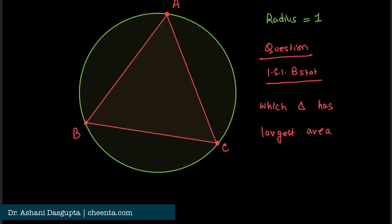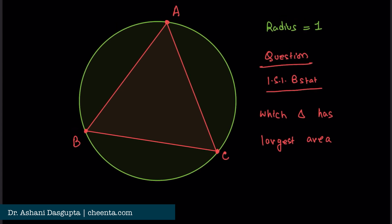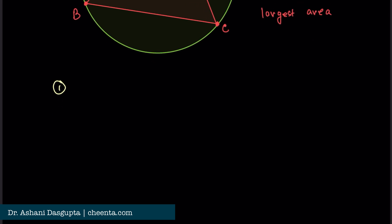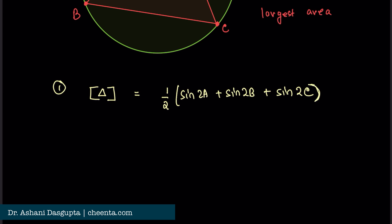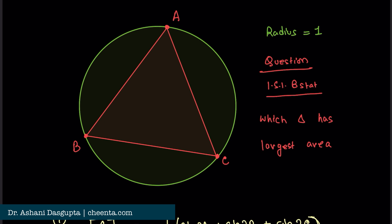This problem has three parts. Part 1 says: show that the area of triangle ABC is half of (sin 2A + sin 2B + sin 2C). This first part is actually quite simple. Just choose the center of the circle O, and join OA, OB, and OC.